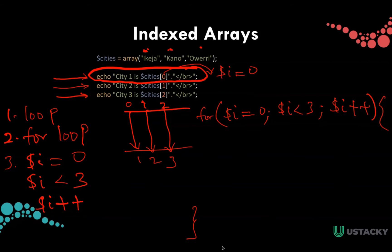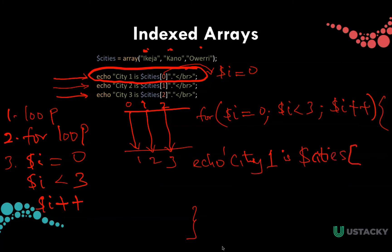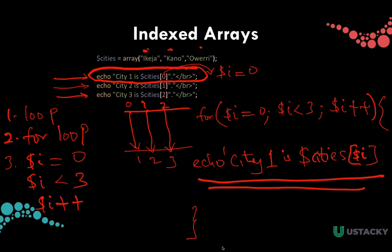So to write it, we have echo. This is city one — we don't know how to get the value of one now, so we can write it as city one is $cities. Instead of writing zero now, we can write $i, because in the first loop $i will be zero, in the second loop $i will be one, and in the third loop $i will be two. So this matches what we have here.